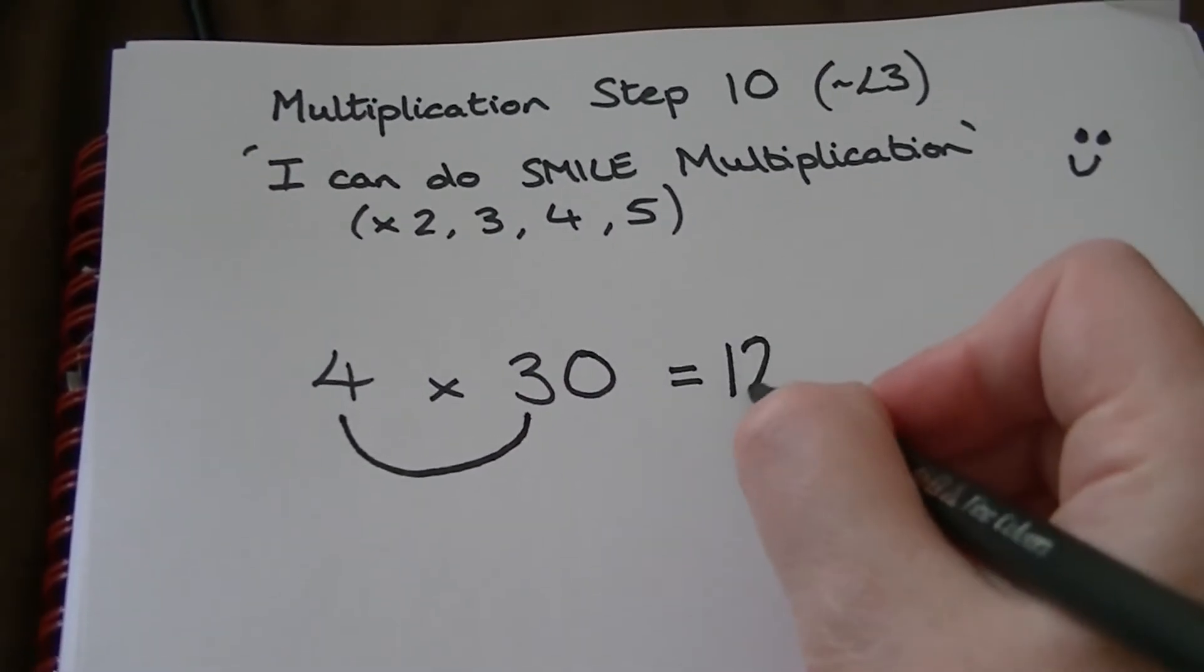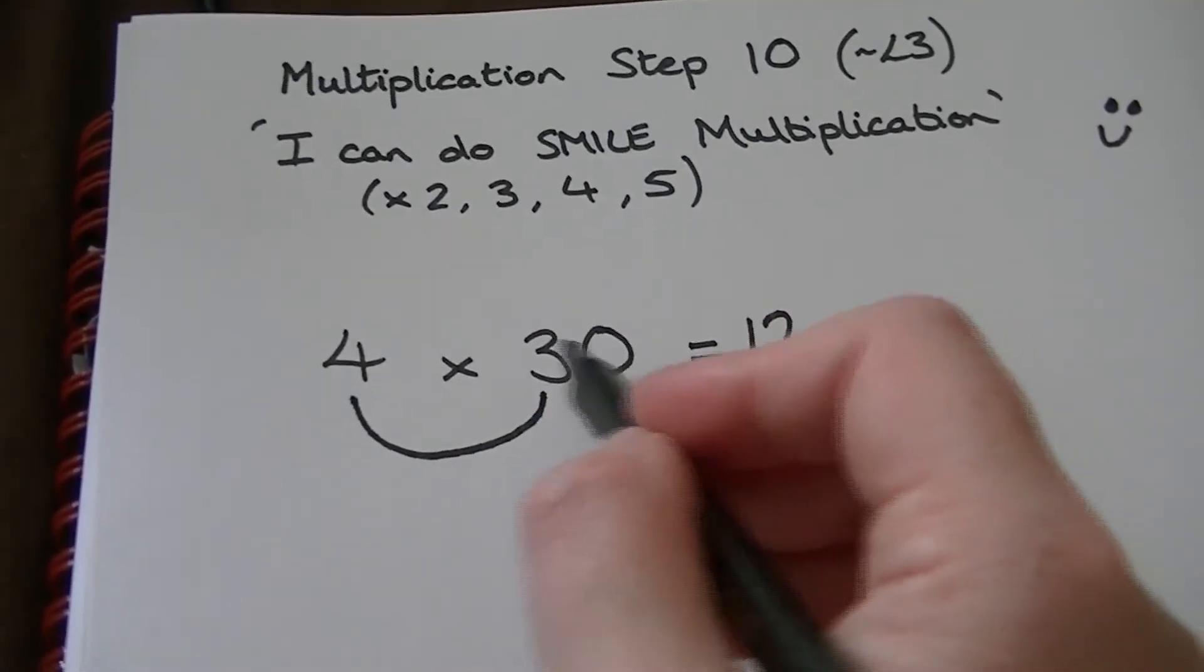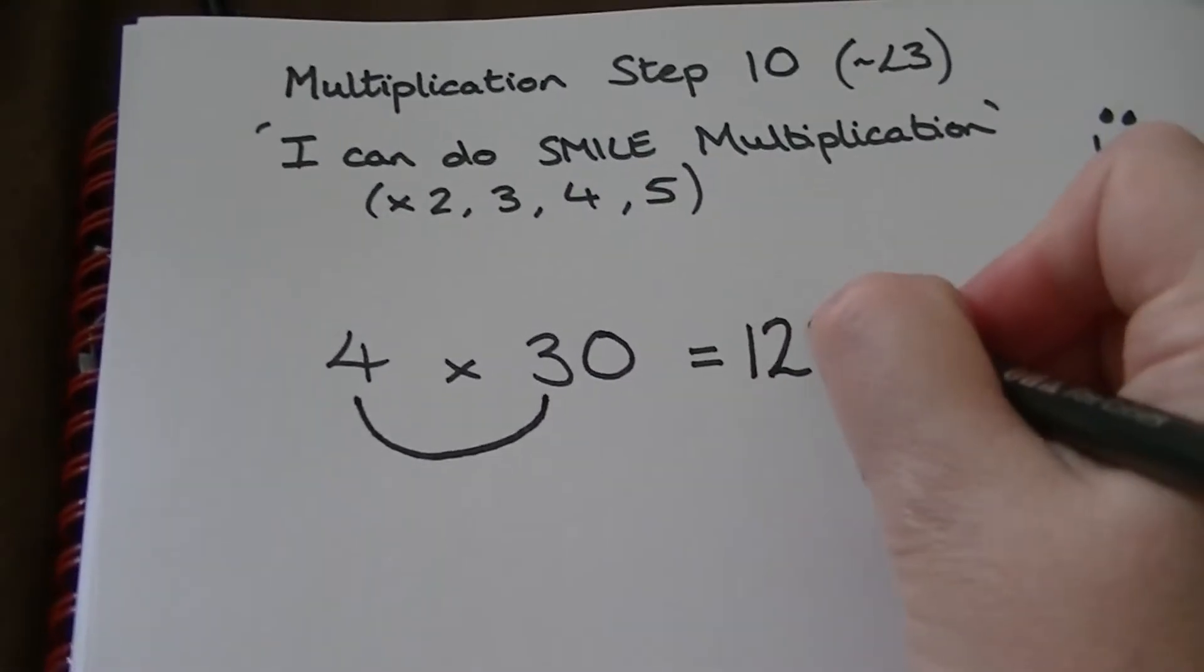So we do the tables bit then we count how many zeros we've got on the other side. We've only got one so we add one here.